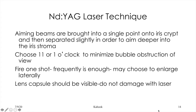With ND YAG laser, the aiming beams are brought into a single point onto iris crypts, then separated slightly to aim deeper into the iris stroma. Choose 11 or 1 o'clock to minimize bubble obstruction, allowing bubbles to migrate to 12 o'clock. Fire one shot — frequently enough — then you may choose to enlarge. The lens capsule should be visible; be very careful not to damage it with the laser. Once you see the lens capsule, stop.